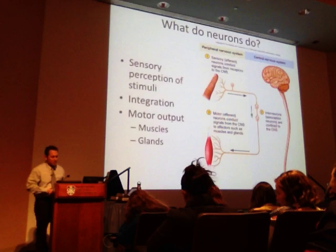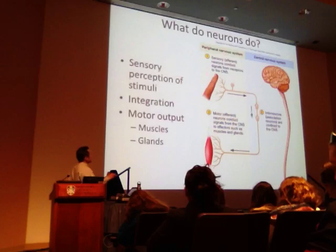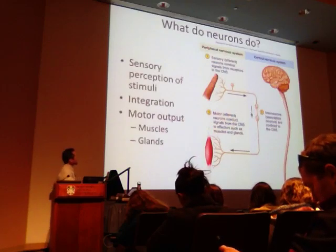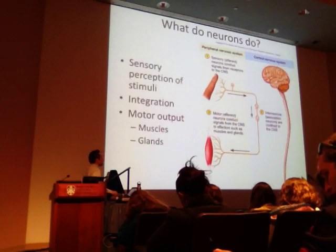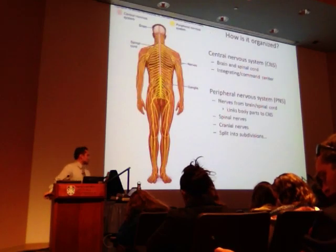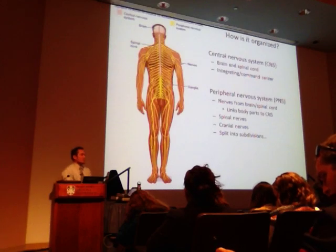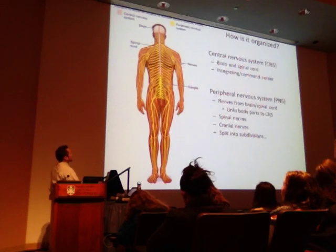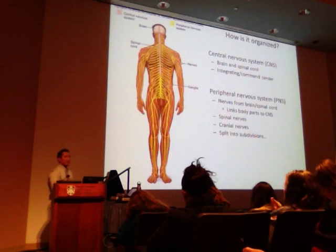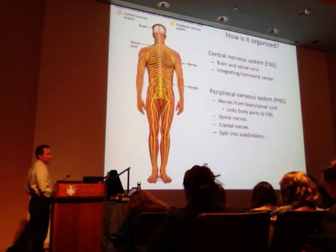Sensory input is also referred to as afferent — A-F-F-E-R-E-N-T. Our motor is referred to as efferent — E-F-F-E-R-E-N-T. We organize the nervous system into two main categories, which you've covered in lab. We have the central nervous system, made up of the brain and the spinal cord. The peripheral nervous system is everything outside of that.